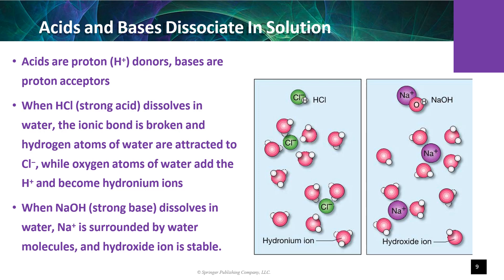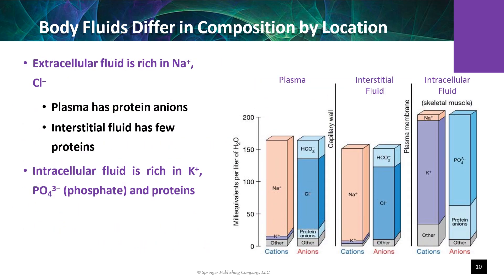The blood pH range is 7.35 to 7.45, and body homeostasis is maintained by the respiratory and renal systems. Body fluids differ in composition by their location. The extracellular fluid is extremely rich in sodium and chloride, while the intracellular fluid is very rich in potassium, phosphate, and proteins.